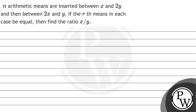Hello with John. Let us see the question. The question says: n arithmetic means are inserted between x and 2y, and between 2x and y. If the rth mean in each case be equal, then find the ratio of x to y.